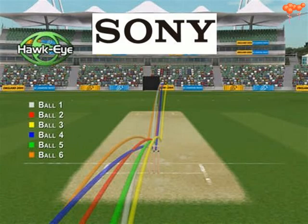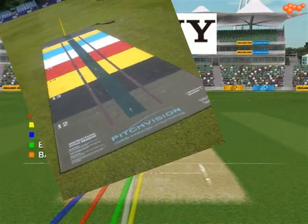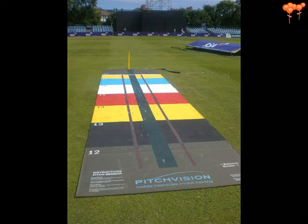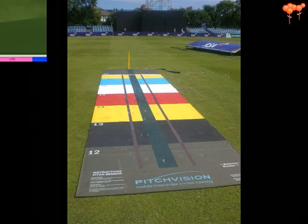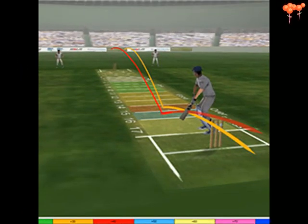Ball Tracking: Six strategically placed cameras around the field track the path of the ball from the time it is released from the bowler's hand till it comes to a standstill. A computer then turns the images from the cameras into a 3D image on a virtual cricket pitch.